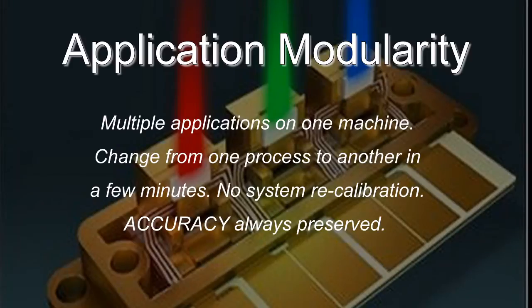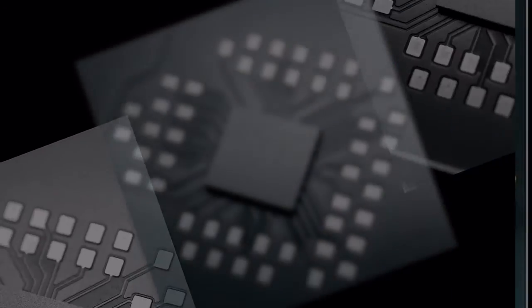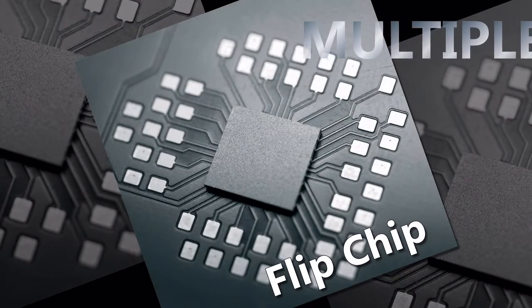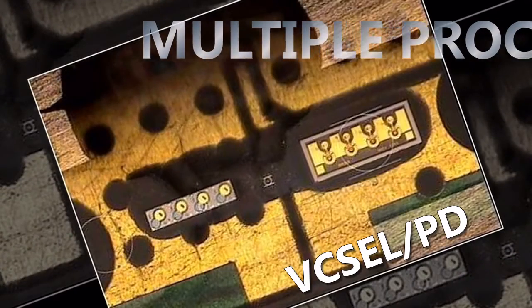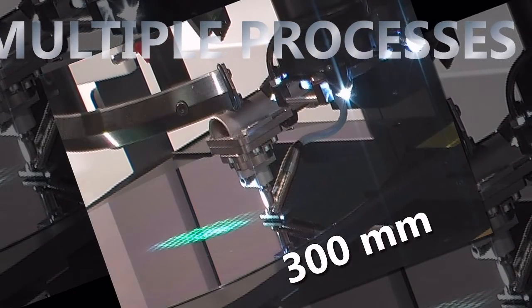Modularity enables a full spectrum of bonding options in a single platform with quick changeover time. It's like having multiple machines in one. Let's take a look at these, ranging from high I.O. flip chip to gold-on-gold Vixel bonding, and just about everything in between, including 300-millimeter chip-on-wafer.